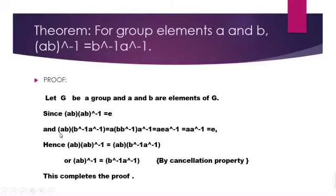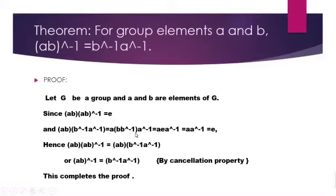This element can be rewritten using associativity, because A, B, B inverse, A inverse are all group elements. You can talk about B inverse because B is an element of group Z and therefore B inverse exists. Similarly, A inverse exists by the same argument. Since Z is a group, you can apply associativity, and what you get is B B inverse, which is nothing but identity by the inverse axiom.